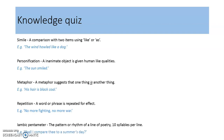And the final one, iambic pentameter — we looked at this one and you were given the definition last week, so hopefully you've remembered. It's the pattern or rhythm of a line of poetry and it has ten syllables per line. We've got an example from Shakespeare: 'Shall I compare thee to a summer's day?' Give yourself a mark out of five. If there were any you didn't get right, you know what you need to practise for next time.